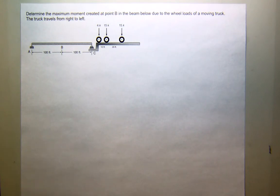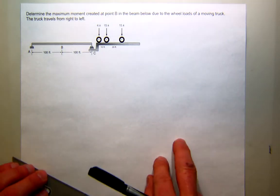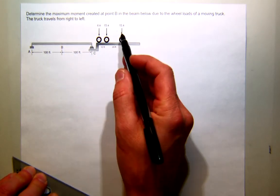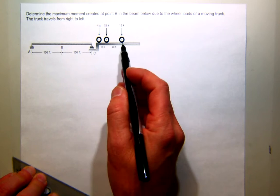Okay, so for this problem, we want to find the maximum moment at B as a set of moving loads goes across this structure from right to left.